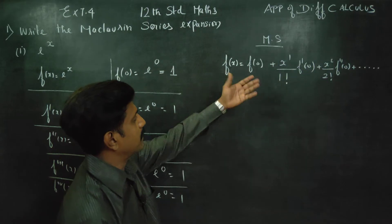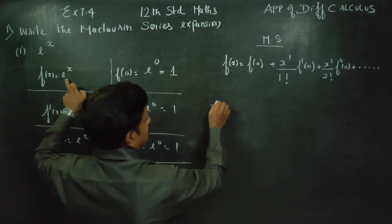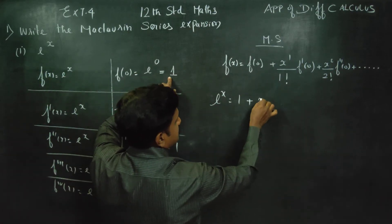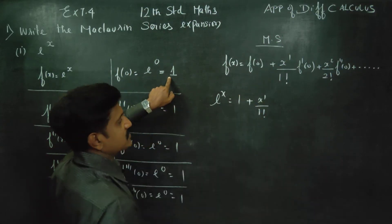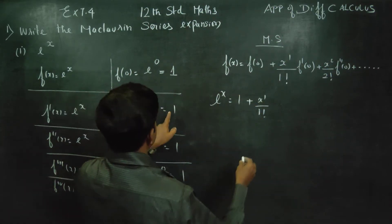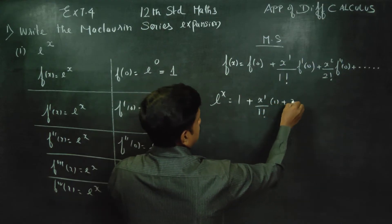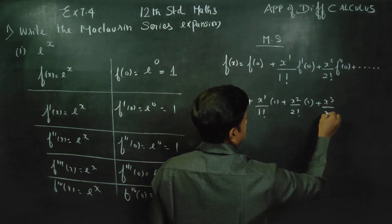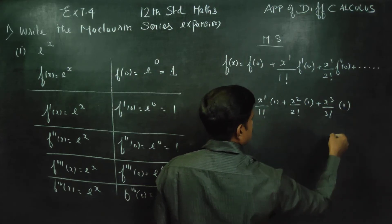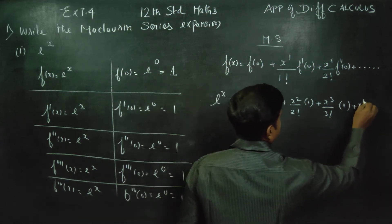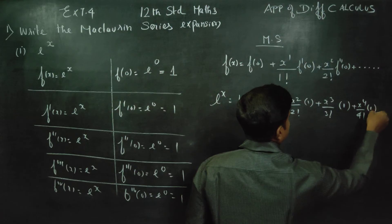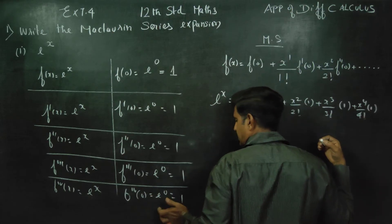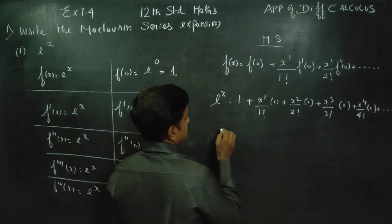1 keeps coming back. What is f of x? f of x in general is e power x. What is f of 0? f of 0 is 1. By x power 1 by 1 factorial into f dash 0 — f dash 0 is 1. x squared by 2 factorial, f double dash 0 is 1. x power 3 by 3 factorial, f triple dash 0 is 1. x power 4 by 4 factorial, f4 of 0 — the fourth differentiation at 0 is equal to 1. Plus dot dot dot.